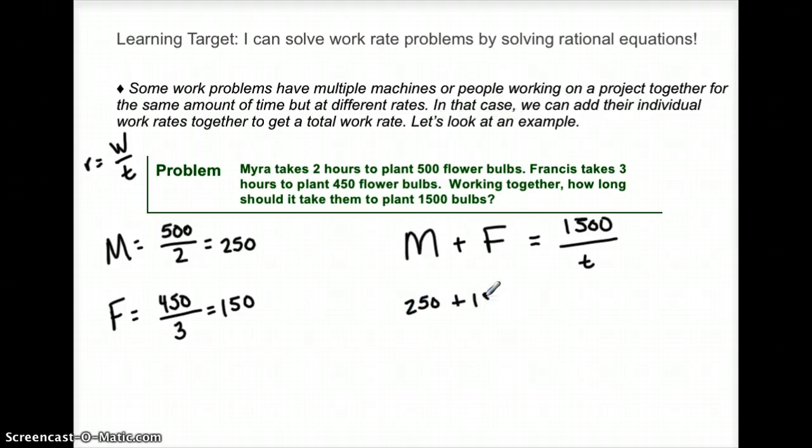Francis is 150. Still equals this fraction, 1500 divided by T. I can add these together. What's that going to be? 400.